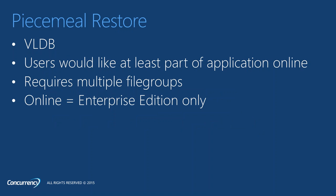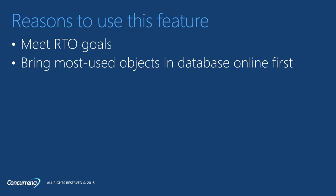Note this is an Enterprise Edition-only feature, and it requires some additional architecture of the database. You bring one file group online at a time, so you need to architect your database into multiple file groups. The way piecemeal restore works is you and the business work together to identify the most frequently used or most important objects in the database, put a plan together to restore those file groups first, and as the database is coming online, users can use at least portions of the program.